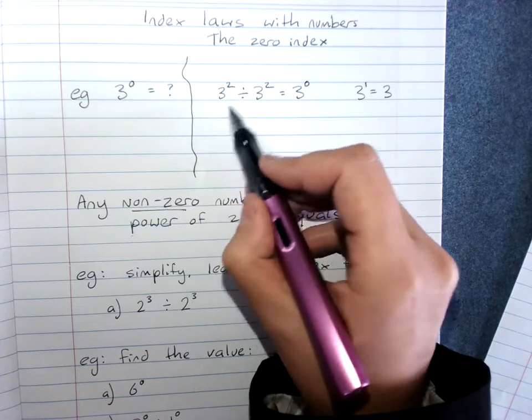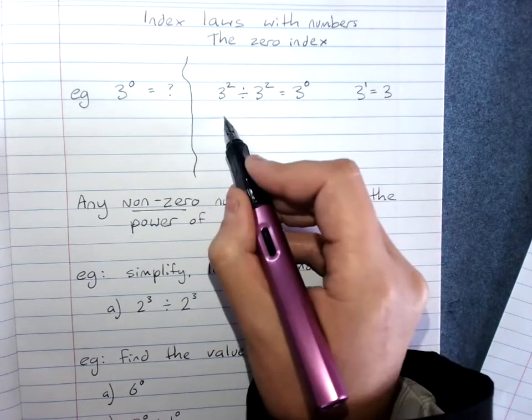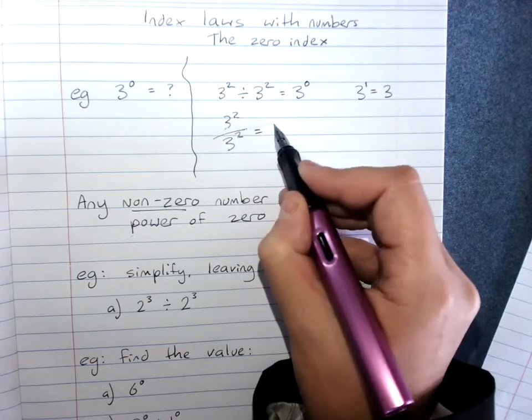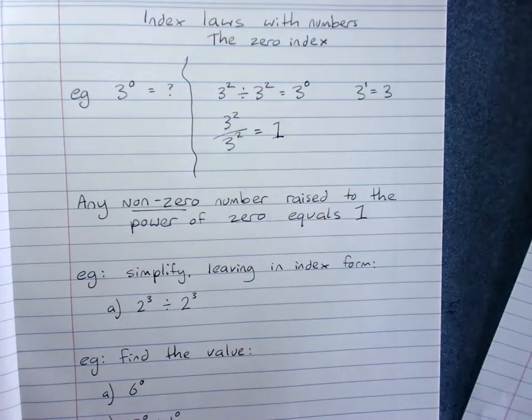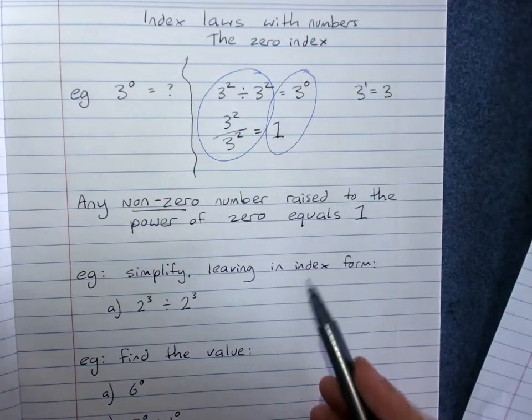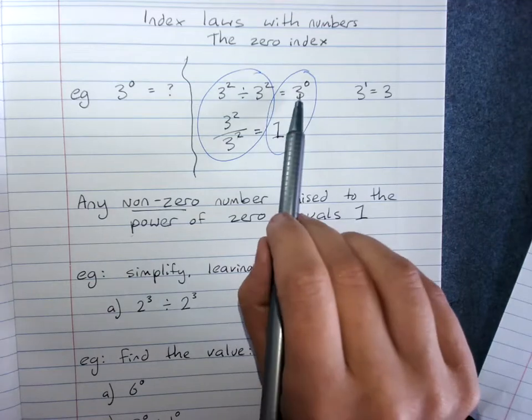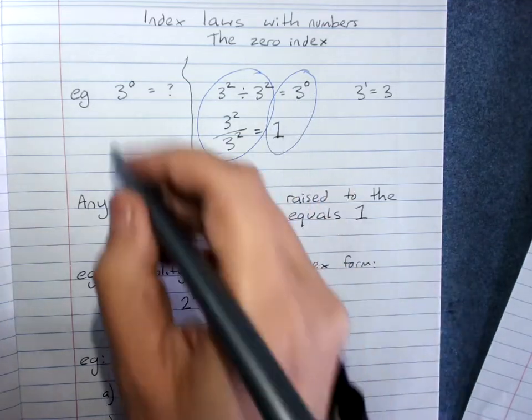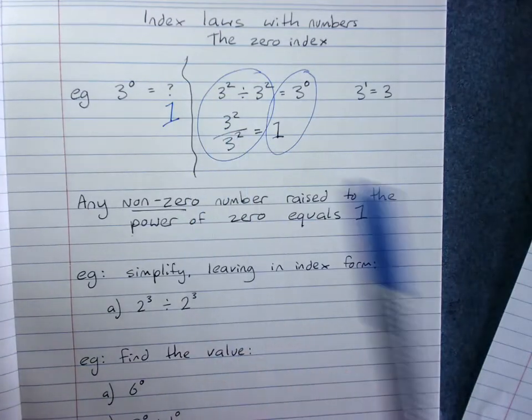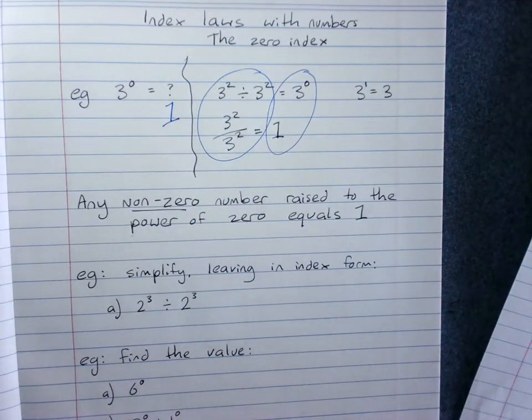But this is 3 squared divided by 3 squared. Anything divided by itself has to equal 1. And so since these two are equal, that means those have to be equal: 3 to the power of 0 is equal to 1. And this works for anything else, unless the base number is 0 itself. Anything to the power of 0 is 1.